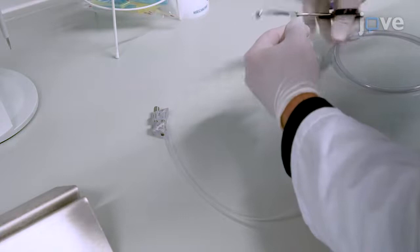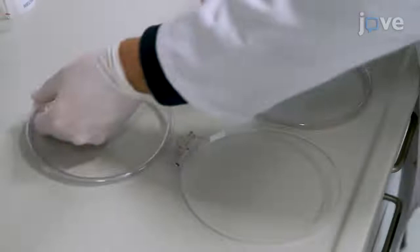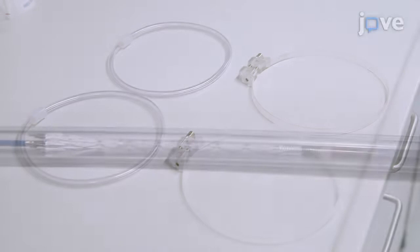To prepare a stent loop assembly, open two of the loops and take the tube out of the tension band system. Then insert the stent into the middle of the tube as instructed by the manufacturer.